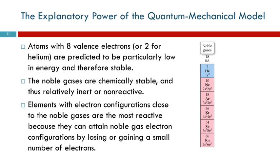So if we look at the noble gases, the noble gases have eight valence electrons except for helium. They are particularly low in energy and particularly stable. That means they don't react with much of anything.